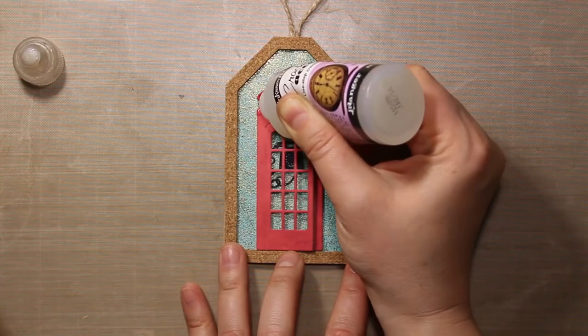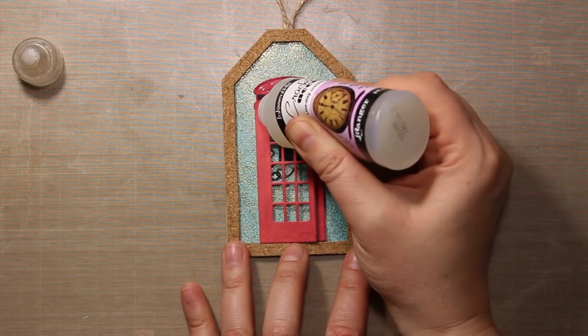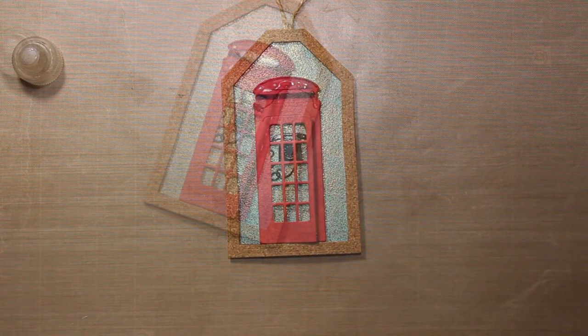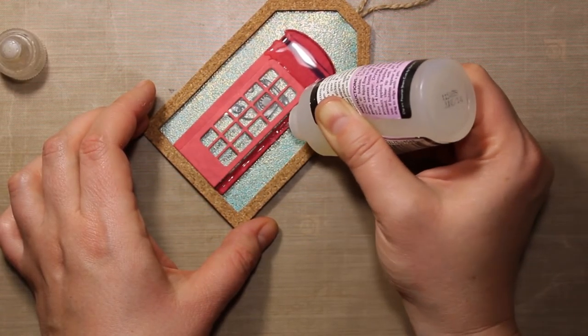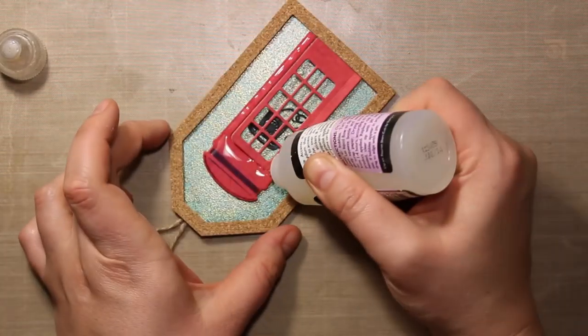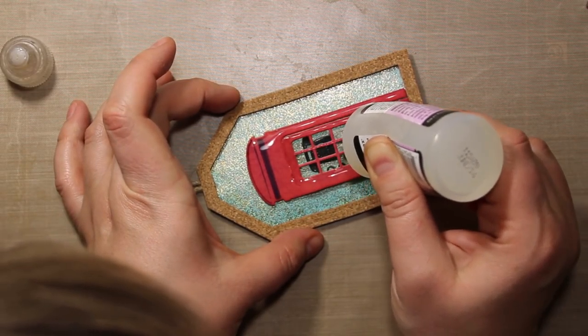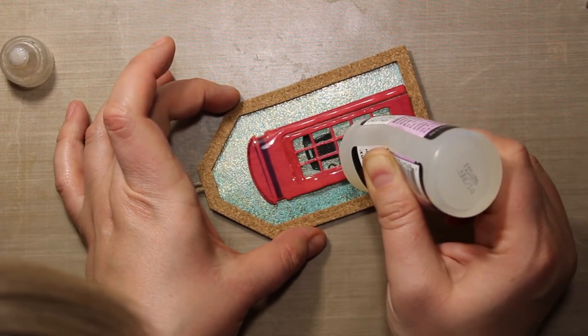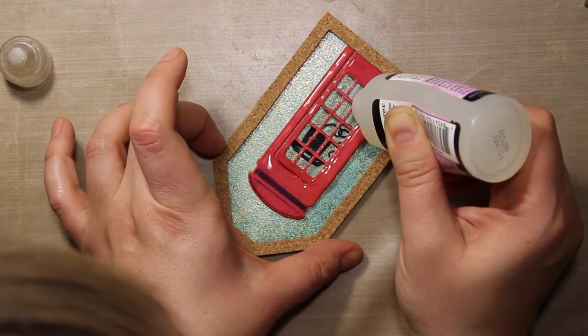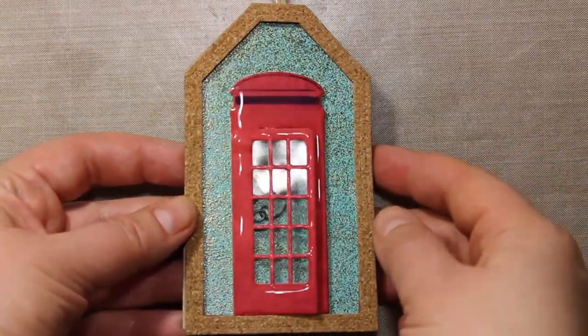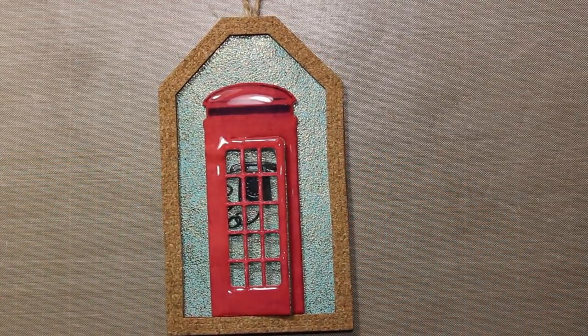You can totally leave the booth as it is, but I have decided to add one more finishing touch to it. I'm applying crackle accents all over the phone booth, and this is the reason why I used permanent ink for stenciling. If you use water-soluble ink, the glaze is going to pick up some of it and it will end up looking a bit smudged. But that's not going to happen if you're using any kind of permanent ink. Now I'm also applying some crackle accents over the door and then I'm going to let it dry overnight.